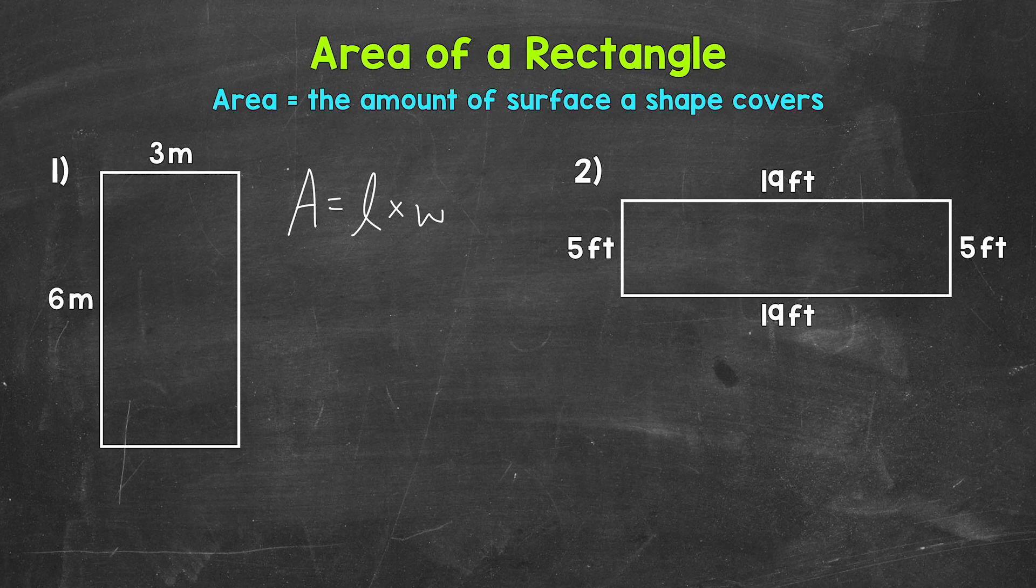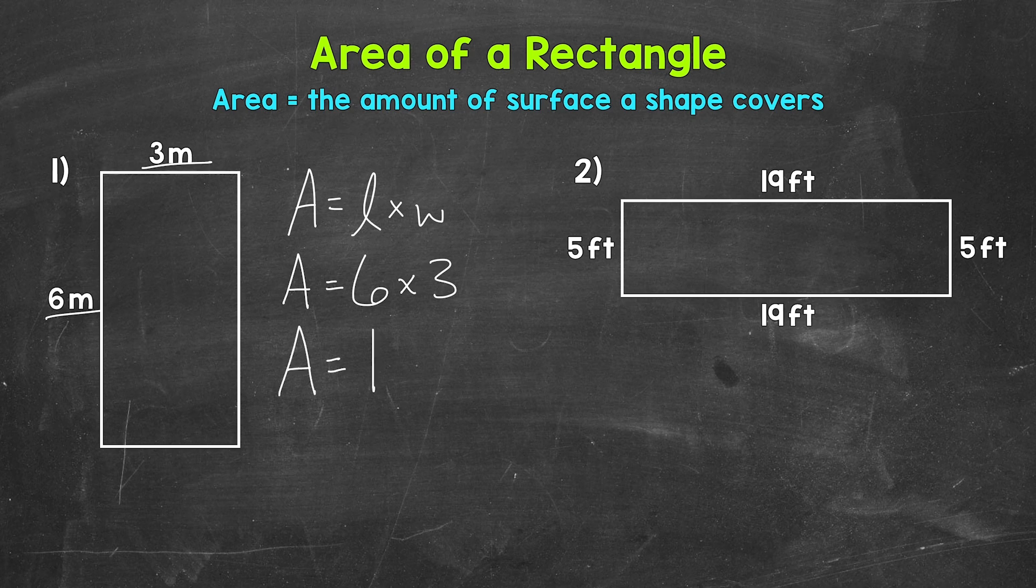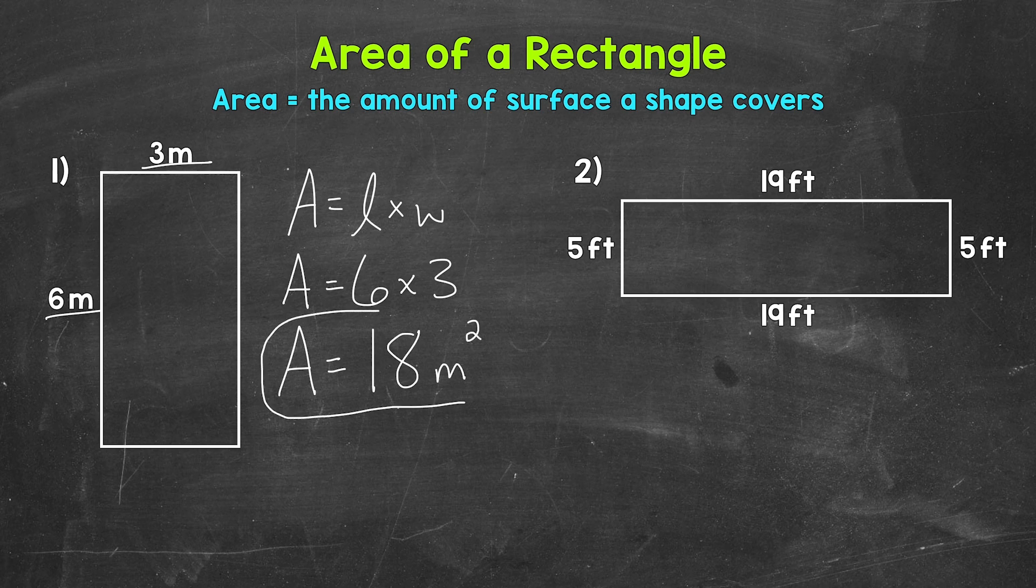Now all we need to do is plug in the length and width and then multiply. I'm going to use the longer side for the length, so 6 meters, and then 3 meters for the width. So area equals 6 meters times 3 meters. And now we can multiply. 6 times 3 gives us an area of 18 square meters. We measure area in square units, so this is square meters.